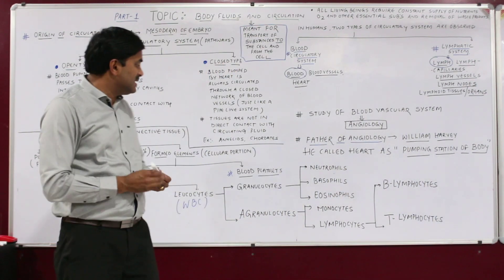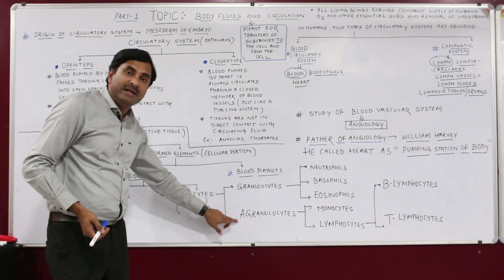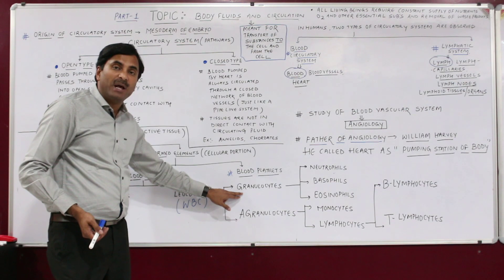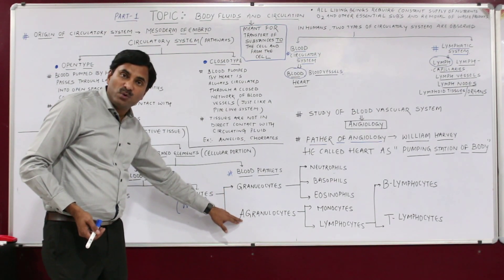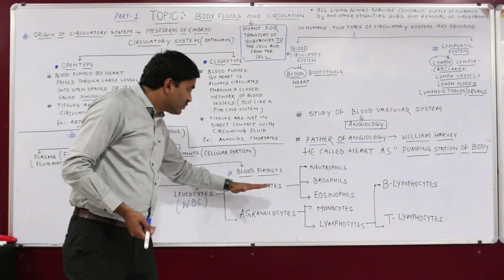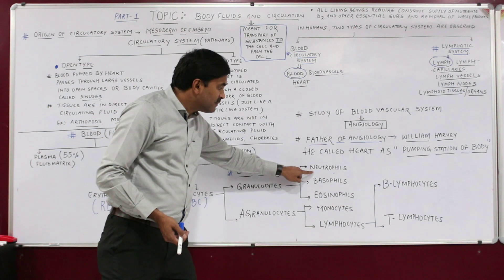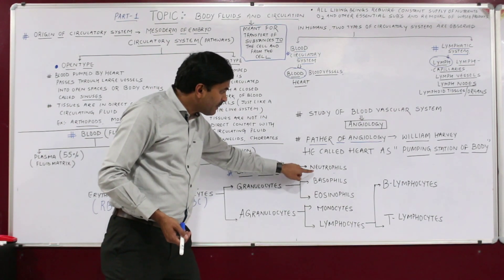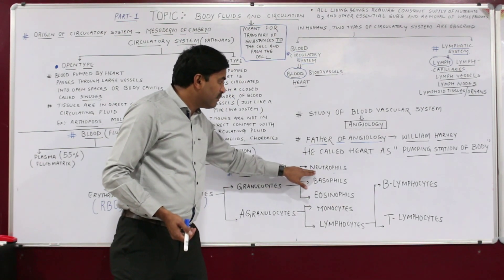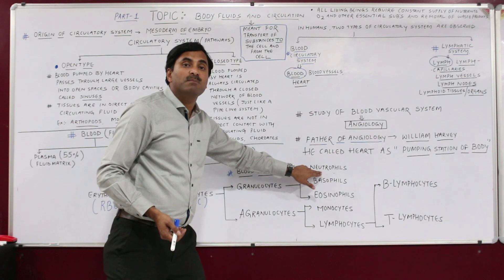Leukocytes or WBCs are of two types: granulocytes and agranulocytes. In granulocytes, the cytoplasm is granular in nature, whereas in agranulocytes the cytoplasm does not contain granules. Granulocytes are of three types: neutrophils, basophils, and eosinophils. The most important and most abundant type of granulocytes are the neutrophils.